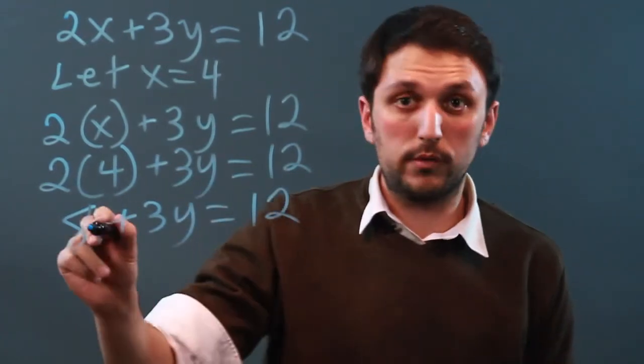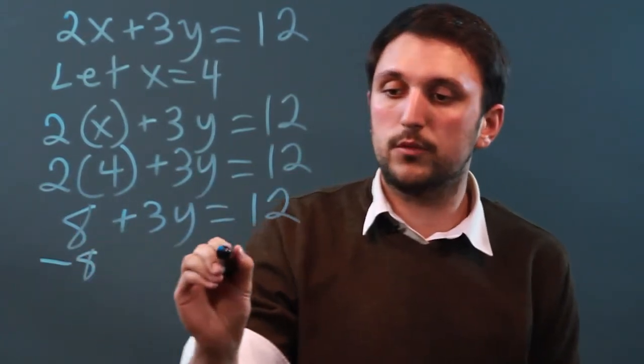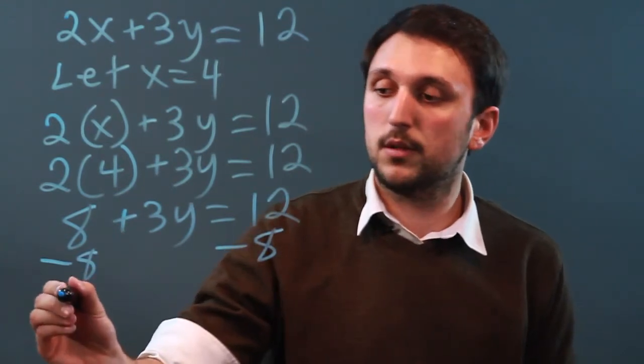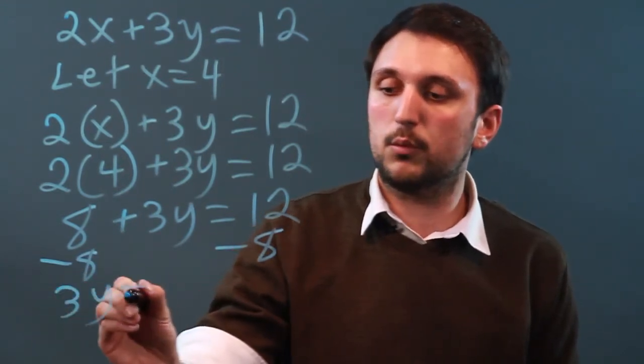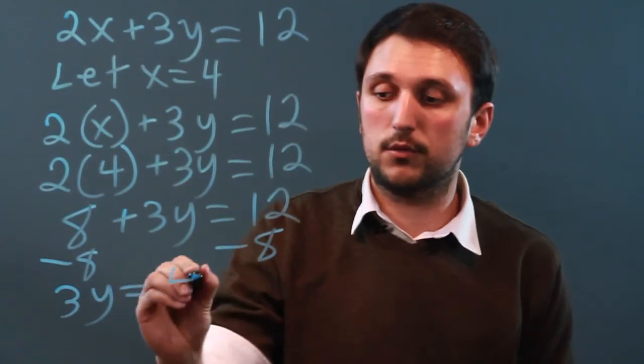Now we subtract 8. We subtract 8 and we get 3y equals 12 minus 8 is 4.